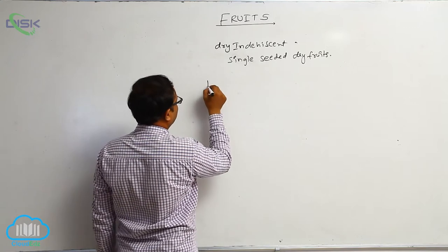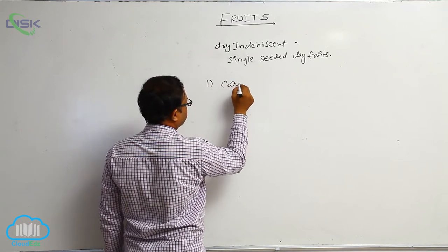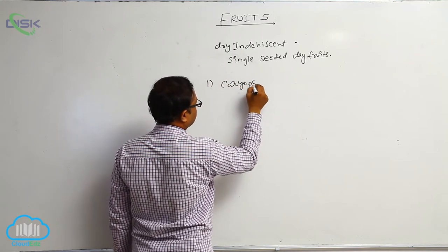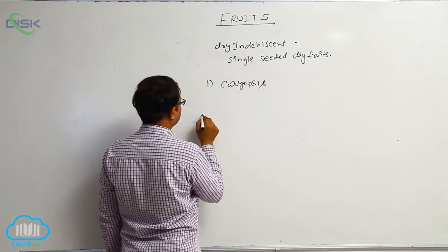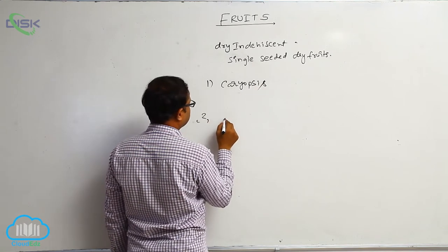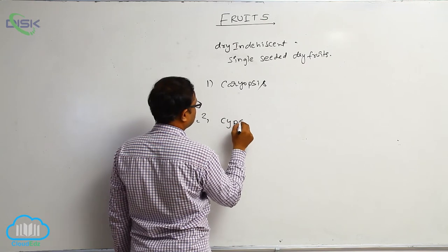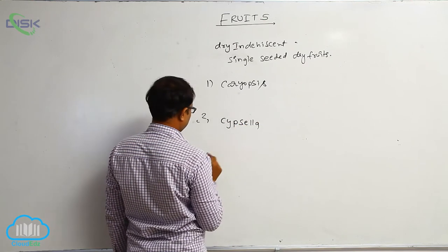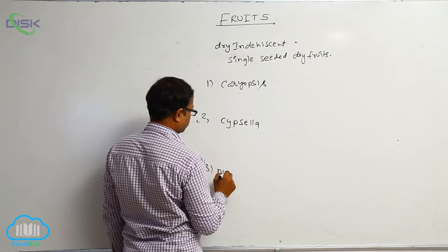In dry indehiscent fruit, the first type is caryopsis, the second one is cypsela, and the third one is nut.